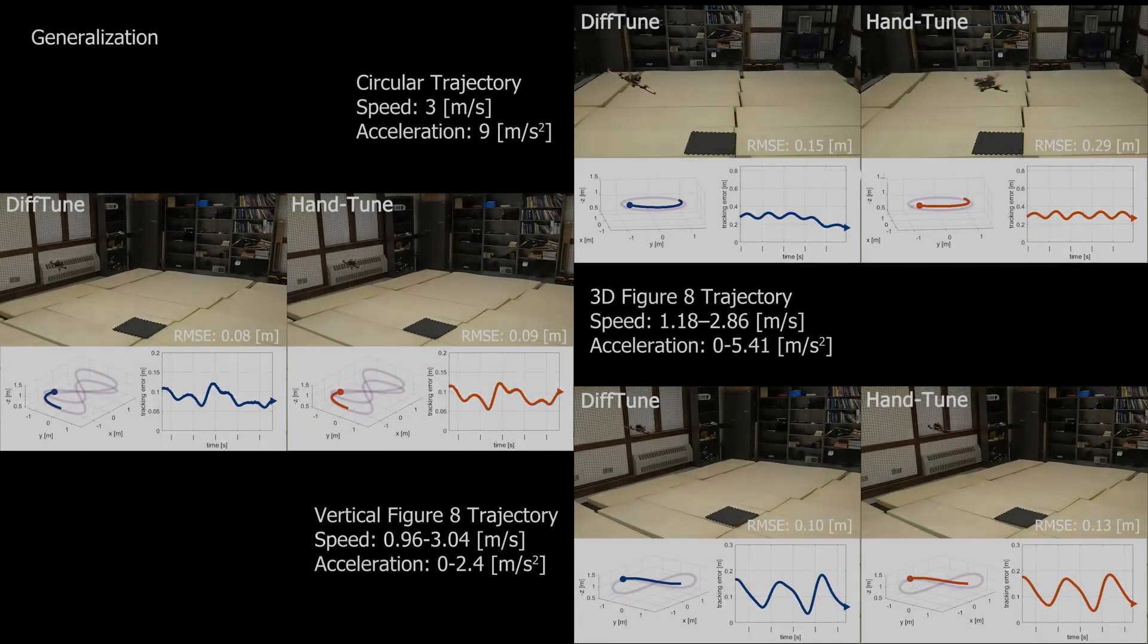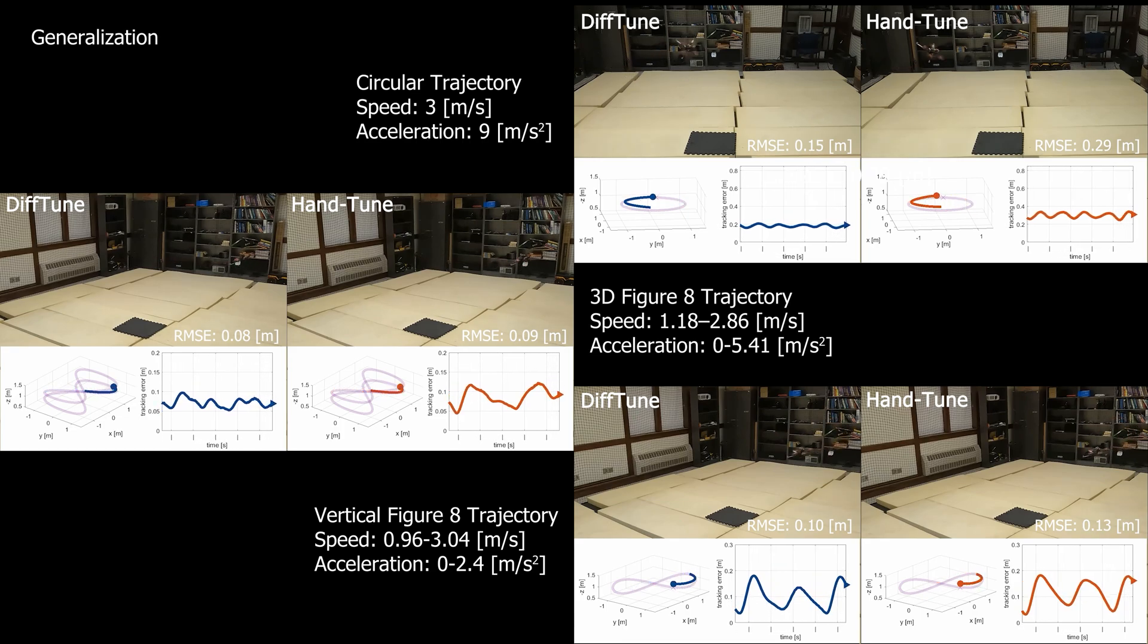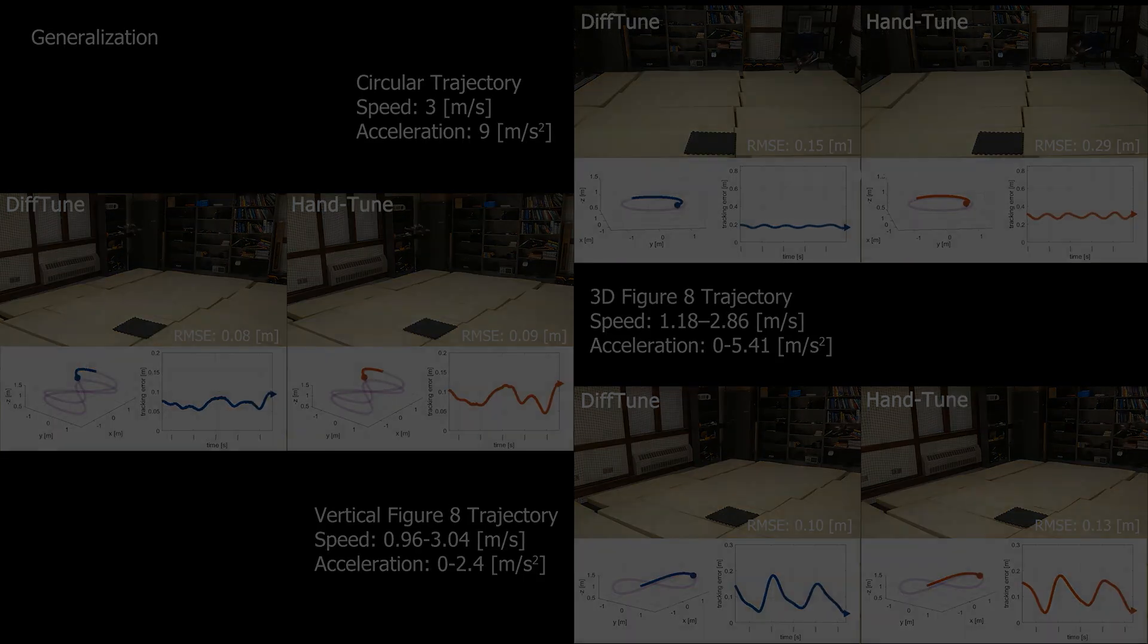We also test the generalization capability of the DiffTune parameters on variants of the figure-eight trajectory. The DiffTune parameters perform well in this test because they are trained for agile maneuvers, which also exist in the testing figure-eight trajectories.